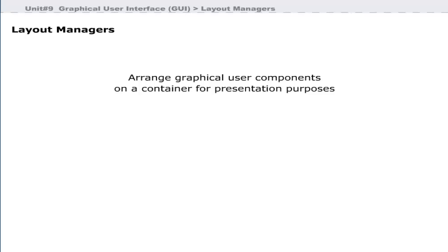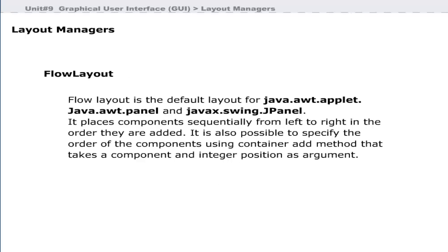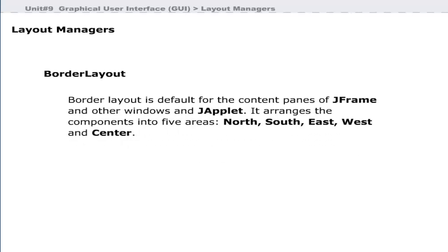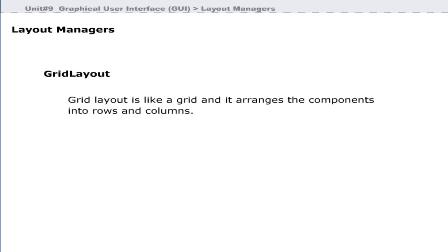There are three LayoutManagers in Java: FlowLayout, BorderLayout, and GridLayout. FlowLayout is the default layout for java.awt.Applet, java.awt.Panel, and javax.swing.JPanel — it places components sequentially from left to right. It is also possible to specify component order using the Container.add method that takes a component and integer position as arguments. BorderLayout is the default for JFrame and JApplet content panes, arranging components into five areas: North, South, East, West, and Center. GridLayout arranges components into rows and columns like a grid.